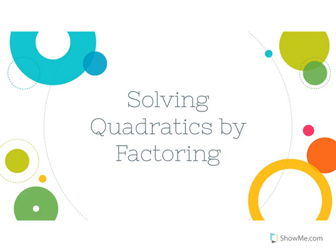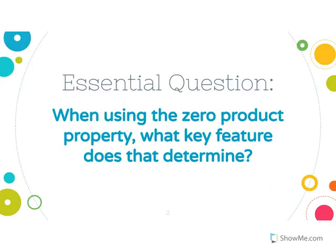Alright, today's notes are about solving quadratics by factoring. Your essential question for this set of notes: when using the zero product property, what key feature does that determine?